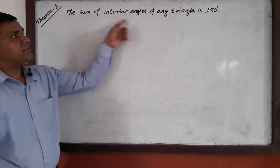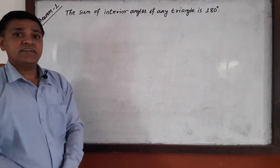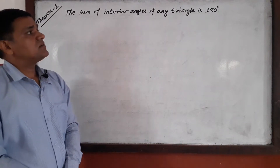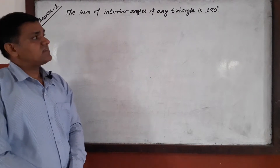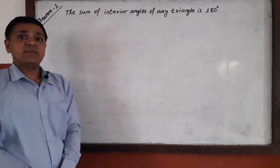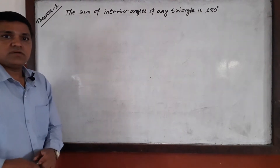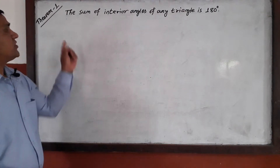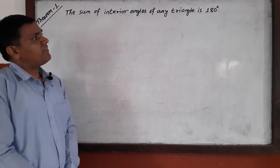The sum of interior angles of any triangle is 180 degrees. I am going to prove Theorem 1: the sum of interior angles of any triangle is 180 degrees.